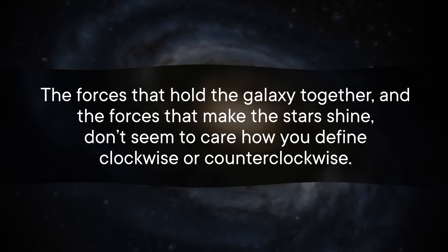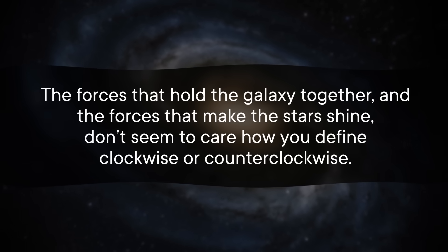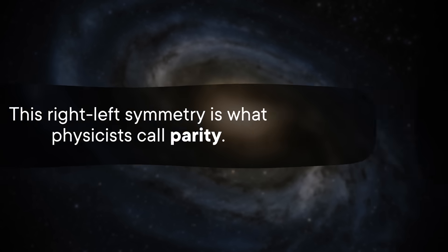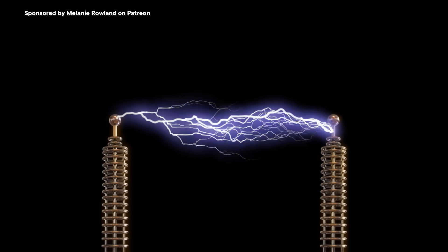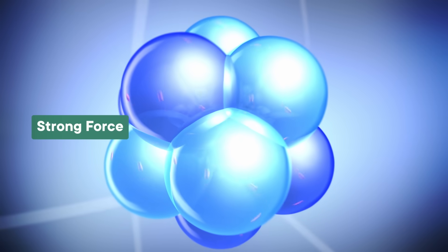No matter which direction it turns or where you view the galaxy from, the laws of physics are the same. The forces that hold the galaxy together and make the stars shine don't seem to care how you define clockwise or counterclockwise. This right-left symmetry is what physicists call parity. For a long time, physicists assumed our world would be entirely indistinguishable from a mirror world where right and left were flipped, and that there was no objective way to define those things.